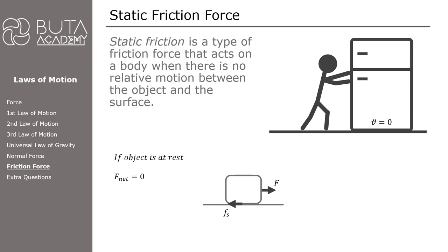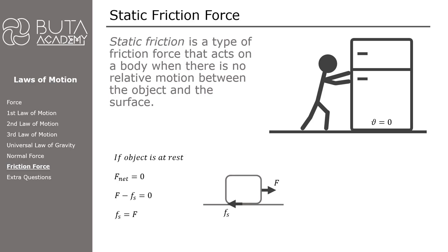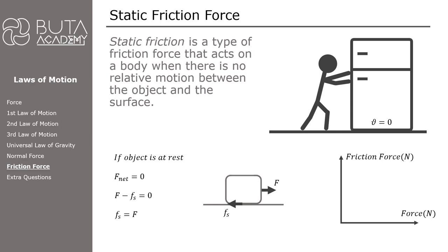If we come back to the net force equals zero equation, there are two forces applied on this object: the applied force, which is to the right, has a positive value, and the friction force, which opposes the motion, has a negative value. Applied force minus friction force equals zero. As a result, the magnitude of the friction force is equal to the magnitude of the applied force. Let's try to plot this information on a graph. This is a friction force versus applied force graph. According to the equation, these two forces are equal. If there is no force applied on the object, then there is no friction either.